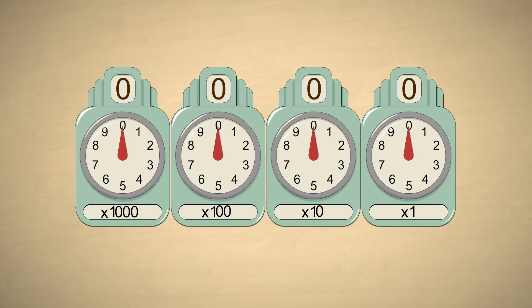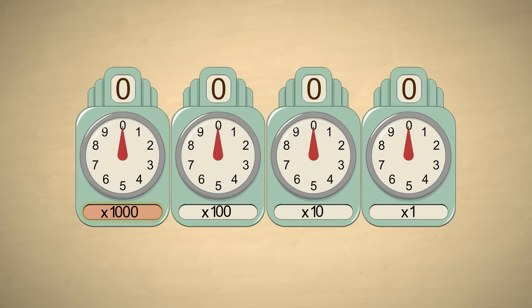Since the decimal system is base ten, each column multiplier differs by a factor of ten from the adjacent columns. The multiplier for the rightmost digit is one. The digits to the left are multiplied by ten, one hundred, and so on. The value of the decimal number is the sum of all its digits times their multipliers.